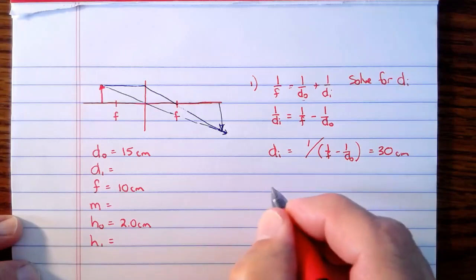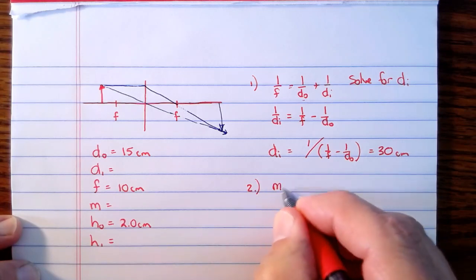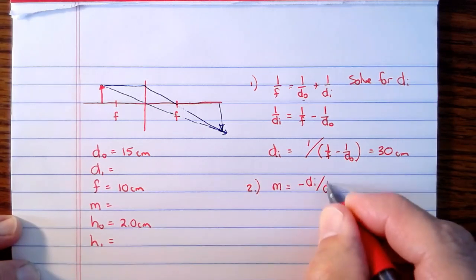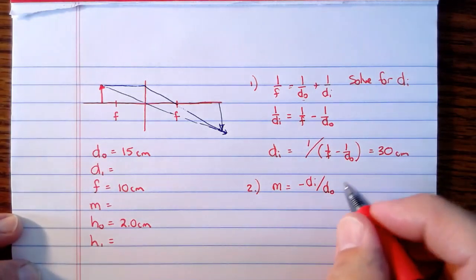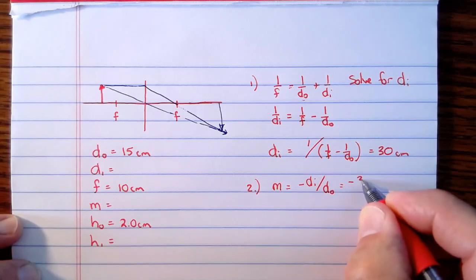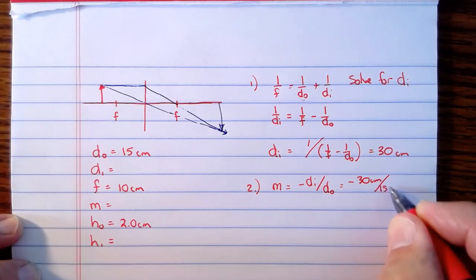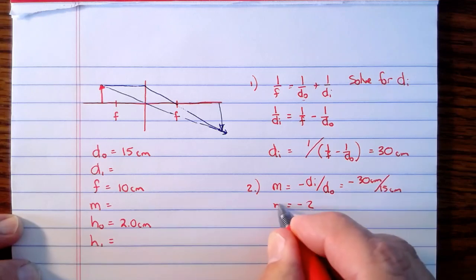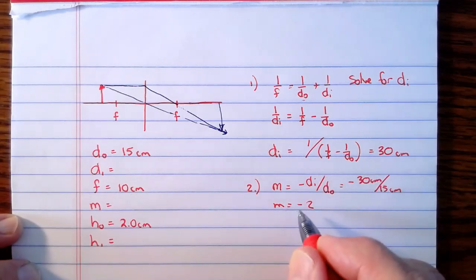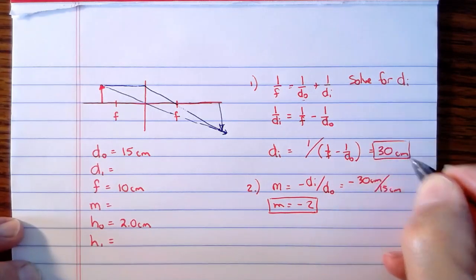Step 2, we need to find the magnification. So the magnification can be written like this: the magnification is negative the distance to the image divided by the distance to the object. That's one of the equations we just showed and worked down in our toolbox. So that's going to be negative 30 centimeters divided by the distance to the object, which is 15 centimeters. And negative 30 over 15 is negative 2. So the magnification is negative 2. And that means that the image is 2 times bigger than the object, and the negative means it's upside down. So I'll put a box around my answers here.